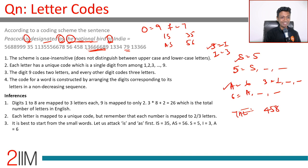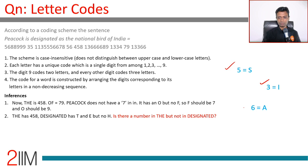Using 'the' and 'designated' together, we can make another inference. 'The' is four, five, eight — containing T, H, E. 'Designated' has both T and E — so it should contain five and eight — but it does not have a four. Therefore four equals H.